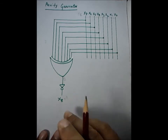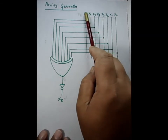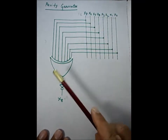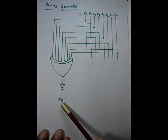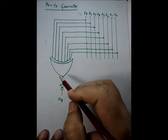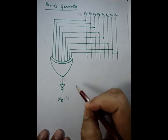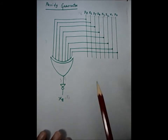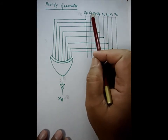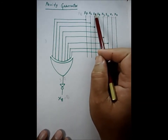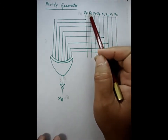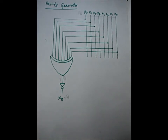Therefore, this circuit is a generator of odd parity. In the reverse case, if x0 to x7 — the eight bits — are originally odd parity, then the XOR will produce one, and x8 will become zero. Therefore, adding zero will leave the parity as odd. So whatever the original eight-bit stream is, even or odd parity, ultimately x0 to x8 will become odd parity, and therefore this circuit is known as an odd parity generator.